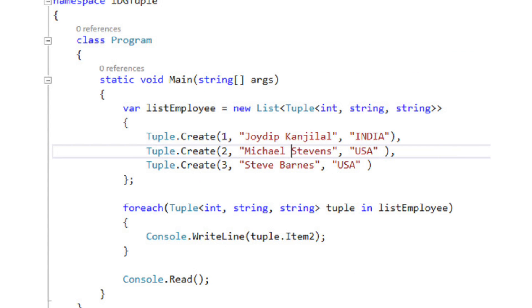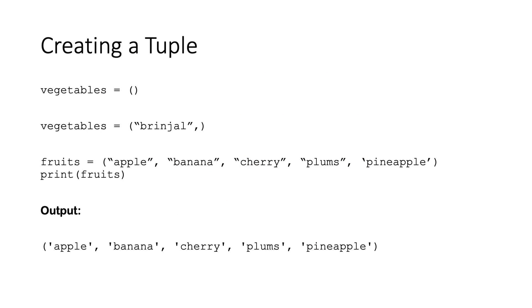Empty tuples will appear as shown in the figure. We see the syntax for creating a tuple in Python. The first line creates a tuple by the name 'vegetables' — written as vegetables equals open parenthesis close parenthesis without any elements inside, so this is an empty tuple. In the next line, we have created the same 'vegetables' tuple, but this time with an item called 'brinjal' inside. Please note that even for a single element, you need to put a comma after that element as per the syntax.